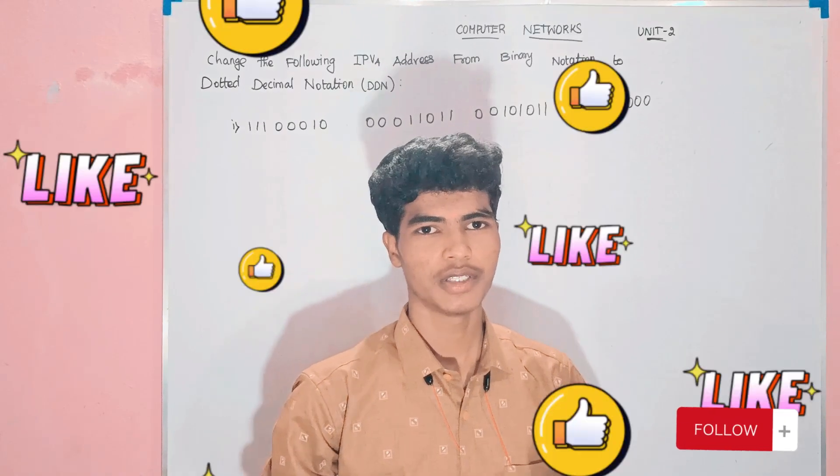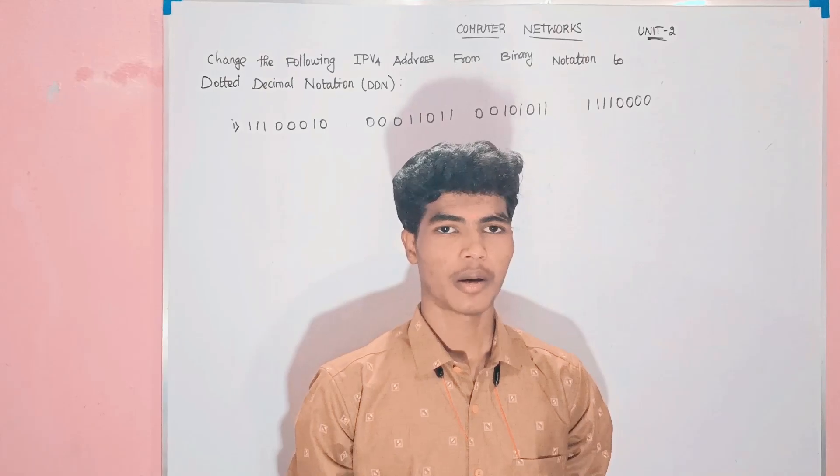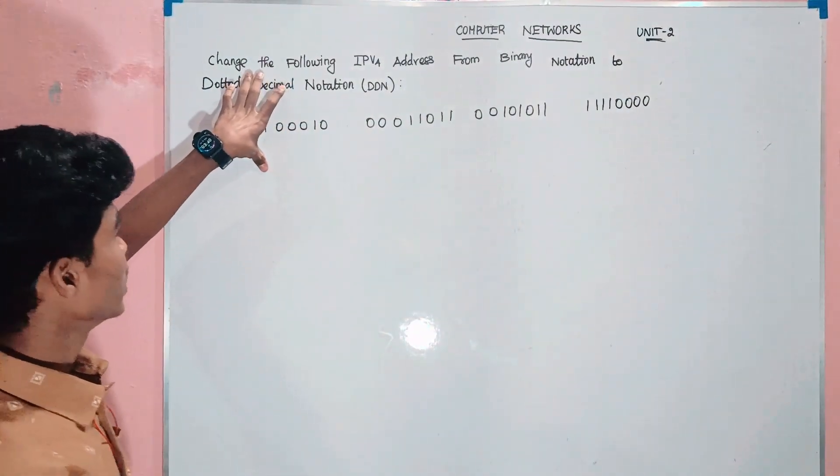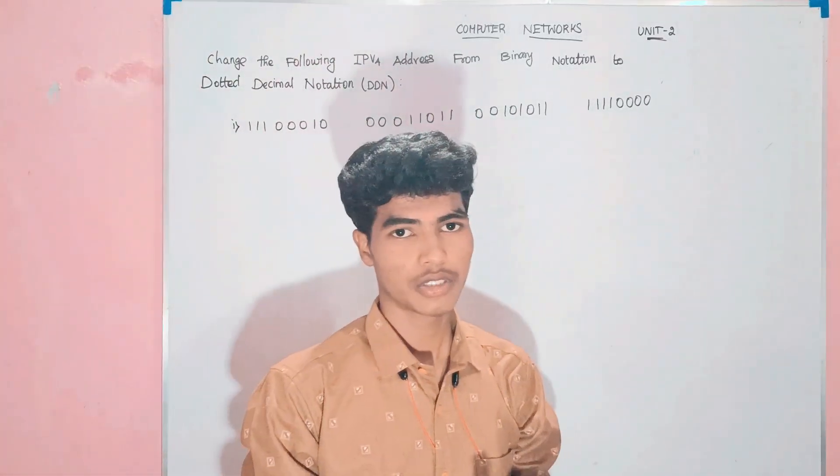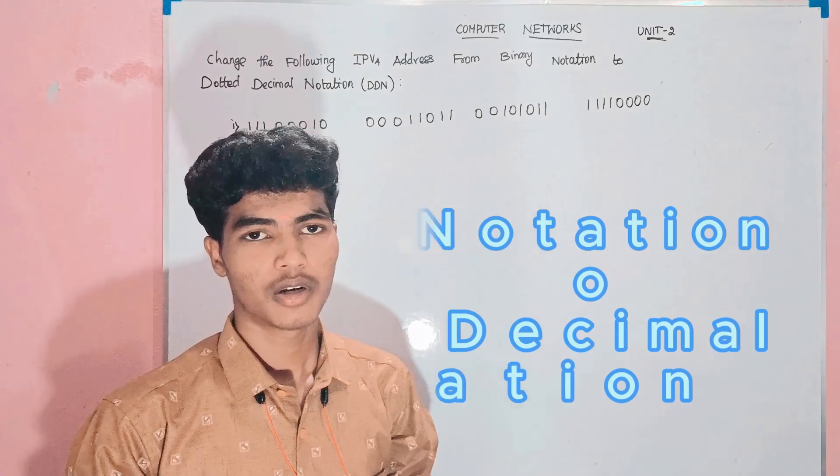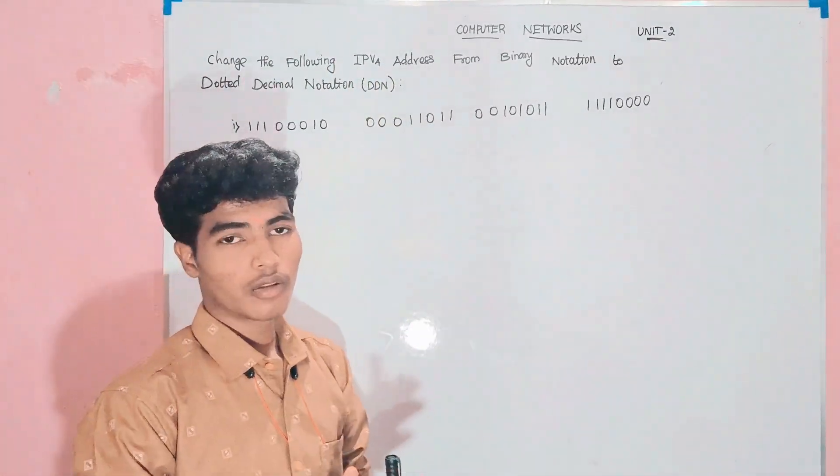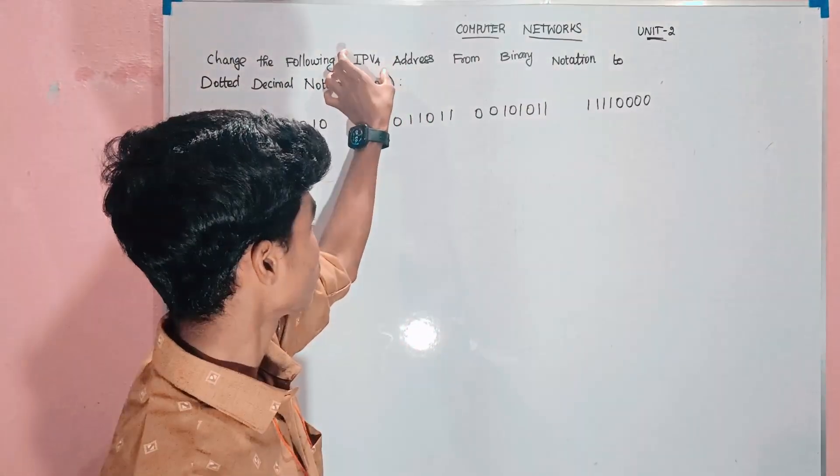Hello Friends, Welcome to VJ Solutions 2.0. In Computer Networks, how to change the following IPv4 address from binary notation to dotted decimal notation. This IPv4 is the Internet Protocol Version 4.